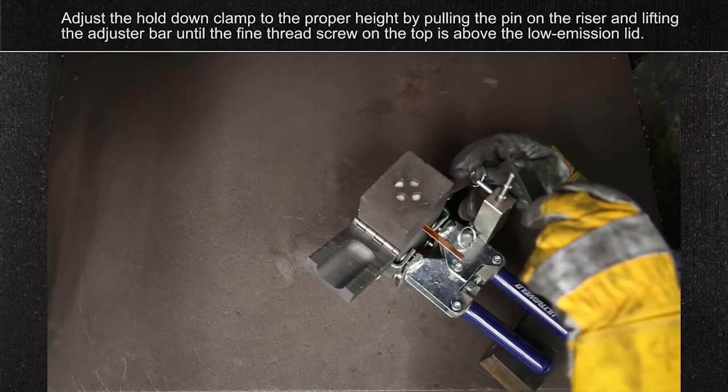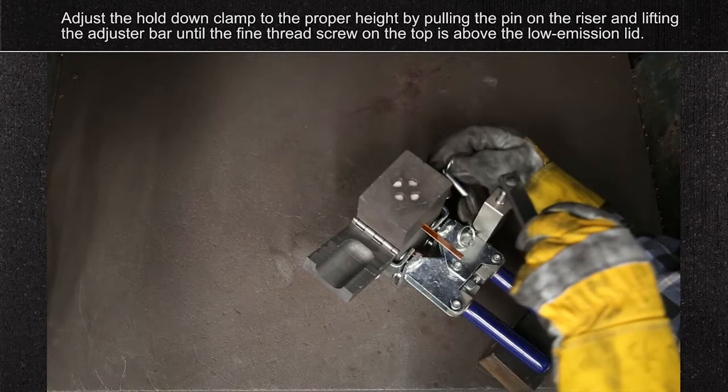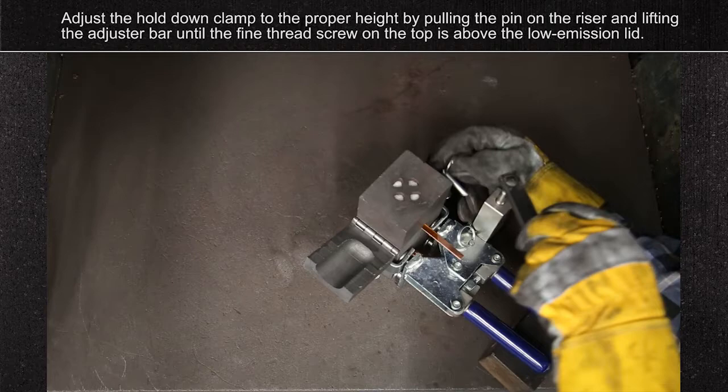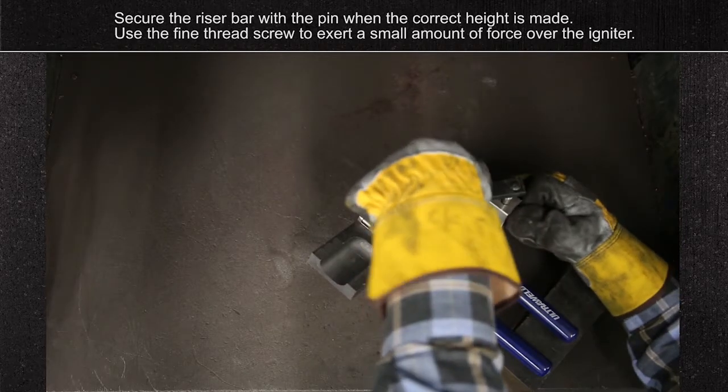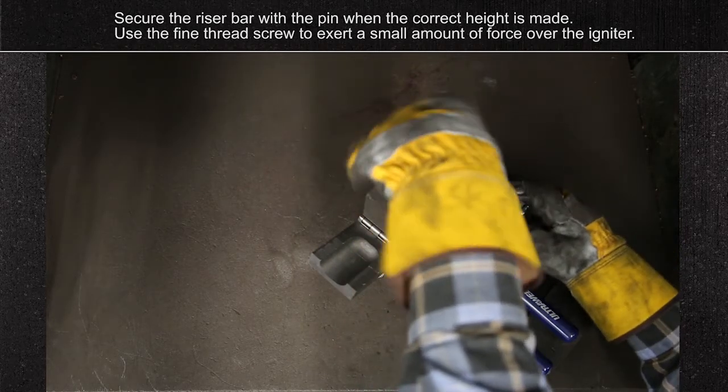Adjust the hold down clamp to the proper height by pulling the pin on the riser and lifting the adjuster bar until the fine thread screw on the top is above the low emission lid. Secure the riser bar with the pin when the correct height is made.